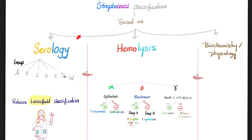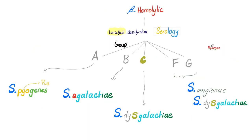Do you remember how we classify Streptococci? Streptococcus angiosus and Streptococcus dysgalactiae are here, according to the Lancefield classification. According to their hemolysis, they are beta-hemolytic — they cause complete hemolysis on the blood agar.